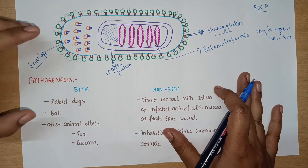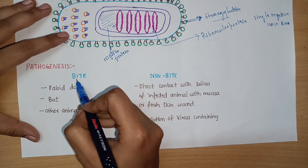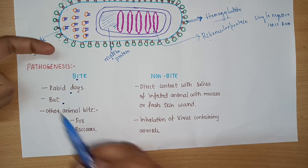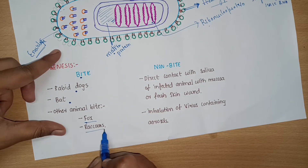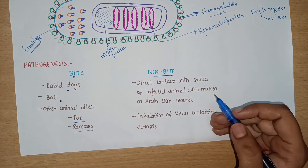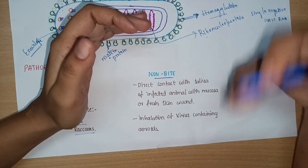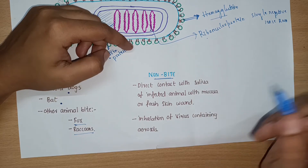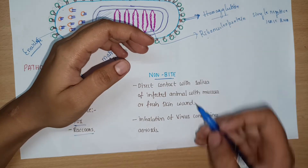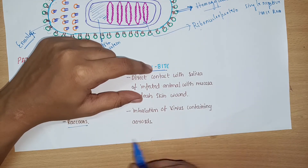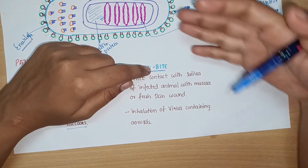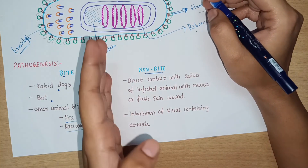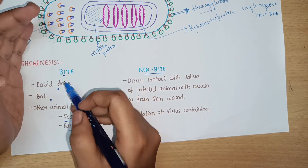Now we will move on to pathogenesis and how transmission occurs. It can be through the bite of a rabid animal such as mad dogs, bats, foxes, and raccoons. Non-bite transmission is from direct contact with the saliva of the infected animal — for example, if you come in contact with a wound from a rabid dog, it may directly transmit through the skin. Inhalation of virus-containing aerosols — if a rabid dog sneezes, the virus can also be transmitted via aerosol particles.